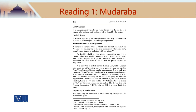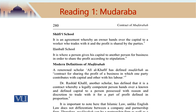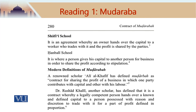I would be reading and you would be listening to me. I will explain certain terms, certain phrases, certain concepts which I find may be relevant for you to learn. Page 280 of the book starts with the Shafi school: it is an agreement whereby an owner hands over the capital to a worker who trades with it and the profit is shared by the parties. Apparently, this is about the contract of Mudaraba — the Shafi school's definition gives one party providing capital and the other party doing trade with it for them to share the profits.